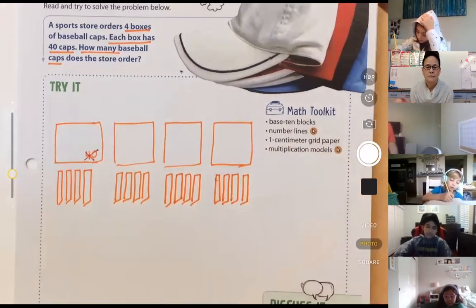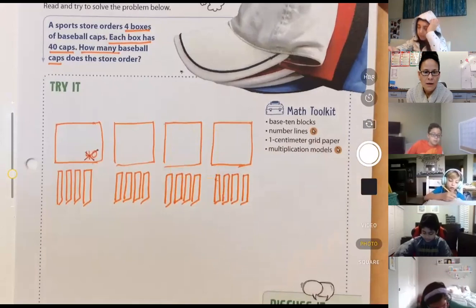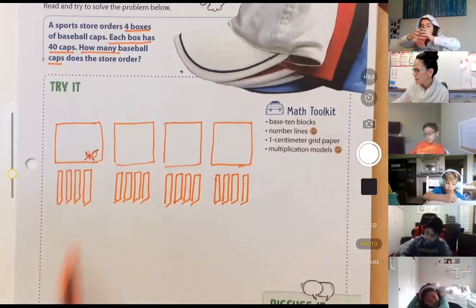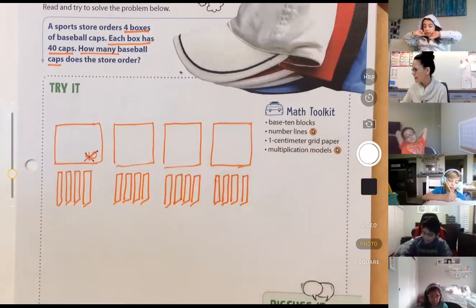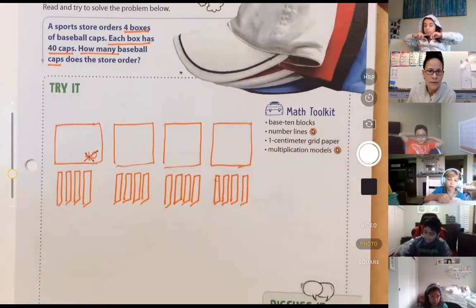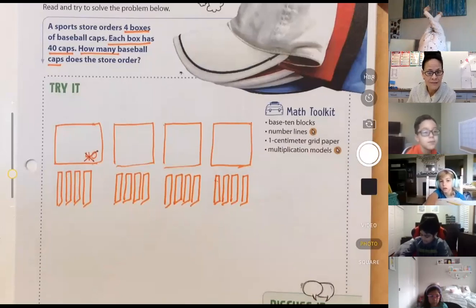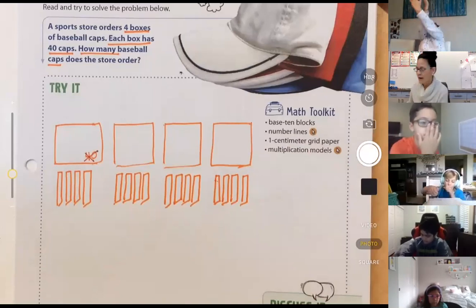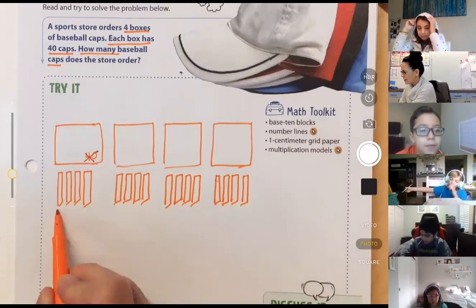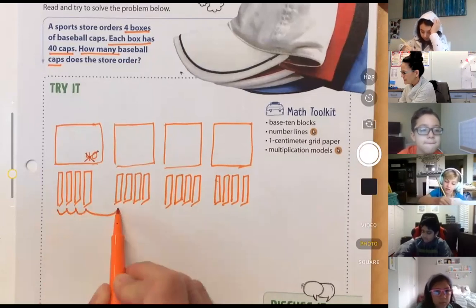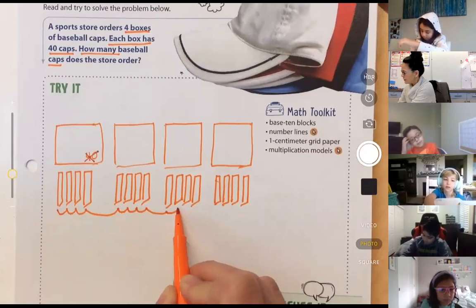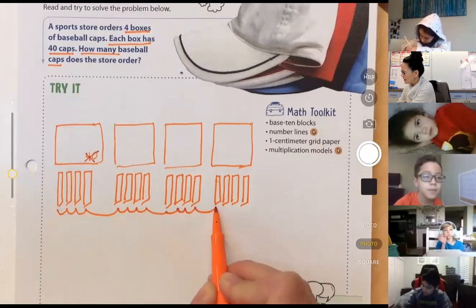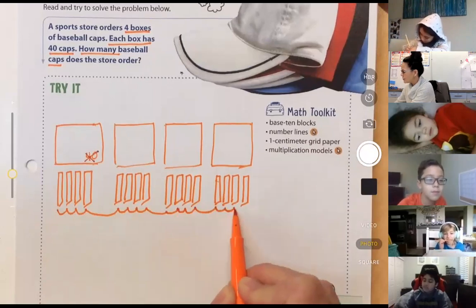But they do help our brains. So friends, four boxes or groups, we have 40 in each. I've modeled each of those 40s with 10 bars. And so now what do we simply do? We can forward count by 10. We can say 10, 20, 30, 40, 50, 60, 70, 80, 90, 100, 110, 120, 130, 140, 150, 160.